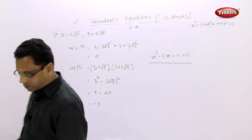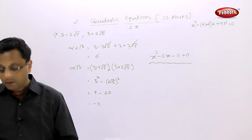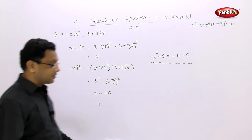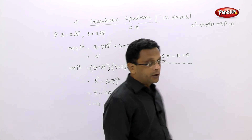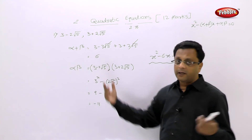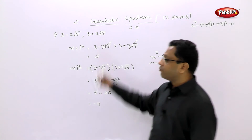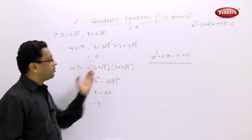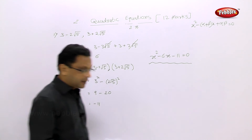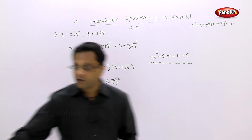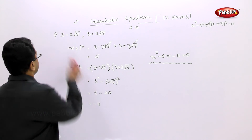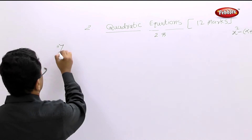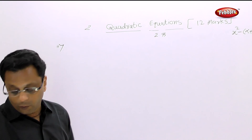Now you can substitute these two values and you will get the required equation: x squared minus 6x minus 11 equal to zero. This is your required equation. I don't think I need to solve again — everywhere you just find the values of alpha and beta. The second root will be the conjugate of the first, find alpha plus beta, alpha times beta, and substitute.